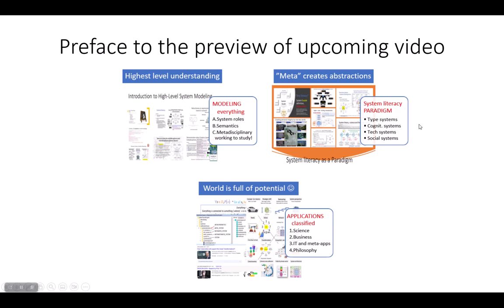In the paradigm, there are categories of system types - categories which enable unifying them all, as if they were the same group. Then applications - there are four parts: science, business, information technology, and philosophy.